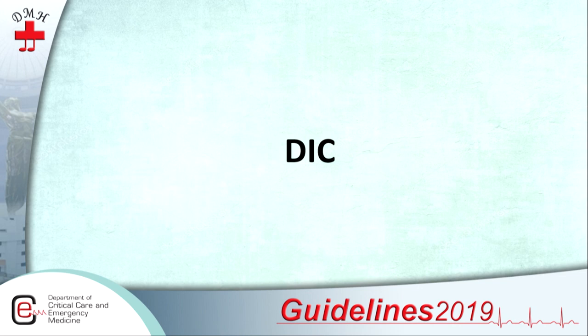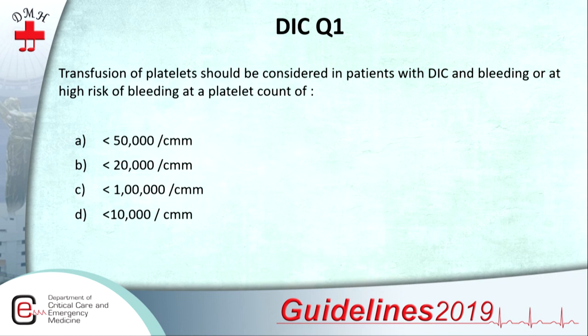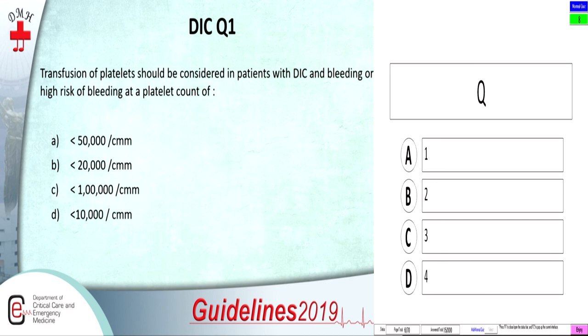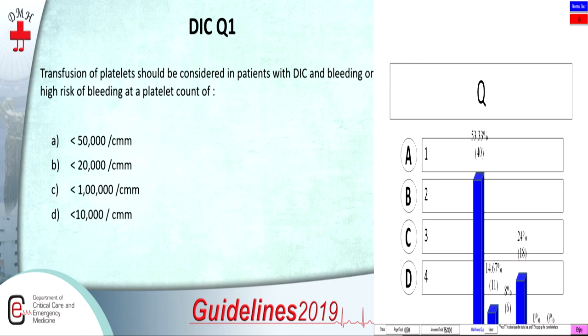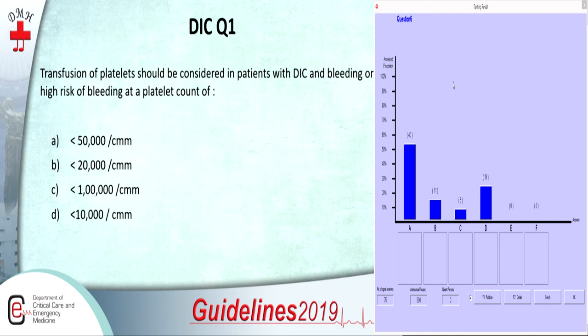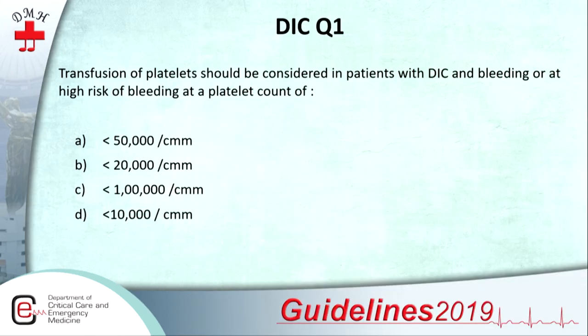Thank you Dr. Bhave — we all agree it was a really excellent talk. Now a quick MCQ: transfusion should be considered in patients with DIC who are bleeding or at high risk of bleeding. What should be the transfusion trigger? 50,000 sounds appropriate for those at higher risk of bleeding. If there is no risk of bleeding, I would even wait up to 20,000. If you have both coagulation defect and thrombocytopenia, it is always better to keep it at 50,000 — so 50,000 is the better answer.